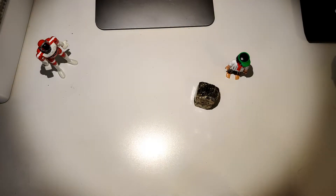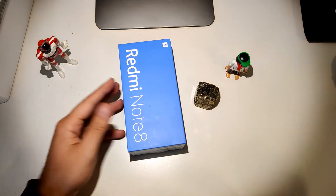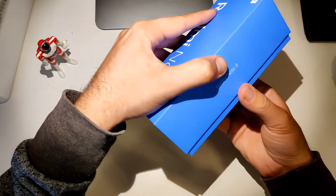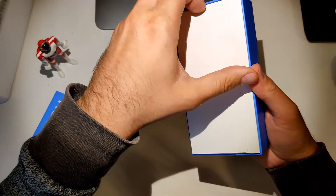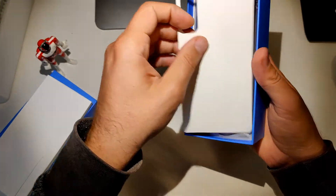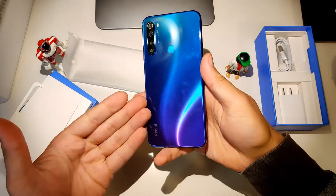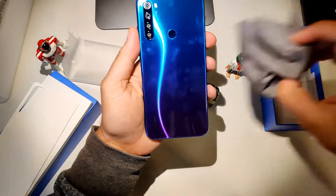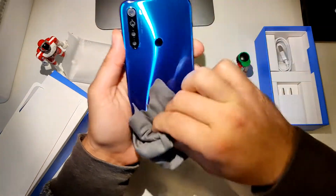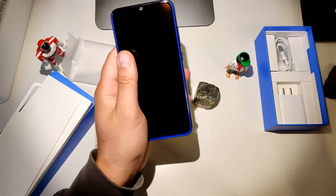Welcome to our first episode from the Xiaomi series: differences between a Chinese Xiaomi phone and a global Xiaomi phone. I have here the star of the show — the Redmi Note 8, which is a China version. I'm not going to do an unboxing and review because this phone has been covered extensively. I got the purple-blue haze color, which is pretty neat.